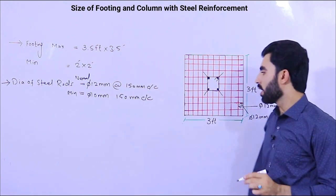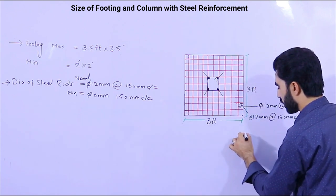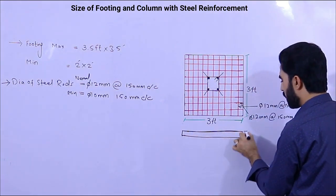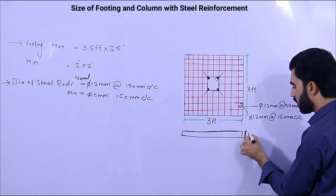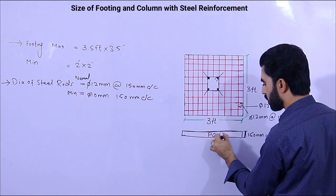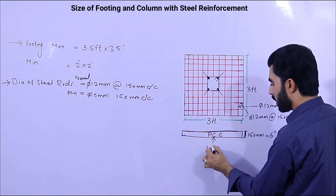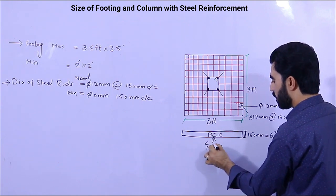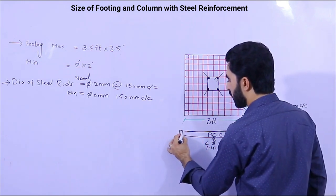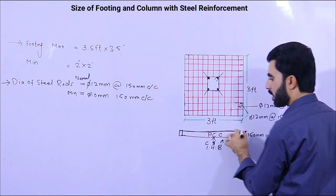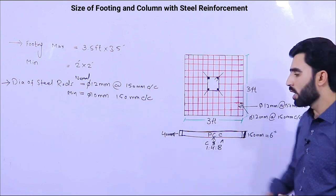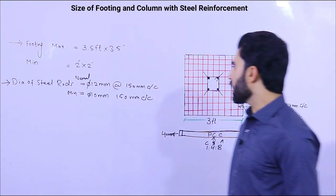On each side the concrete cover should be noted. Now looking at the section — at the bottom, the minimum lean concrete (PCC) thickness should be 150 mm or six inches. The ratio of this PCC should be 1:4:8 — one part cement, four parts sand, and eight parts aggregate. Also remember the concrete cover should be a minimum of 40 mm on each side — on all four sides, at top, bottom, and the sides.